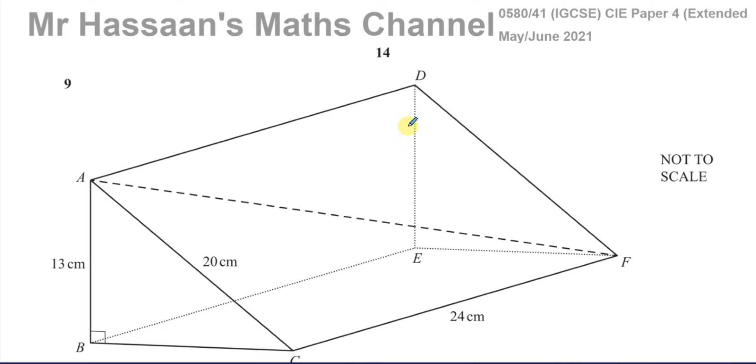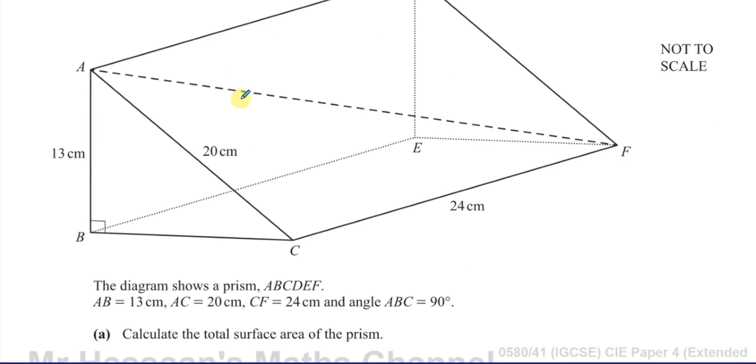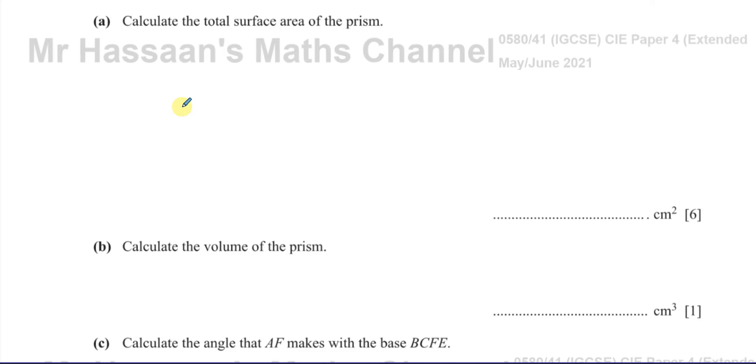Welcome back, this is Mr. Hassan's Maths channel. I'm now answering question number 9 from this May-June 2021 IGCSE Cambridge paper, this is paper 4, variant 1. And this question here is again a question about surface area and volume. But this time we're talking about this prism, and also a bit of trigonometry in this question as well. Angle between a line and a plane.